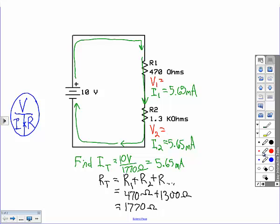So of course, now that we know the current through resistor one and the resistance, we can use Ohm's law to calculate the voltage, which again voltage is going to be current times resistance, or 470 ohms times 5.65 milliamps, which is 2.66 volts.